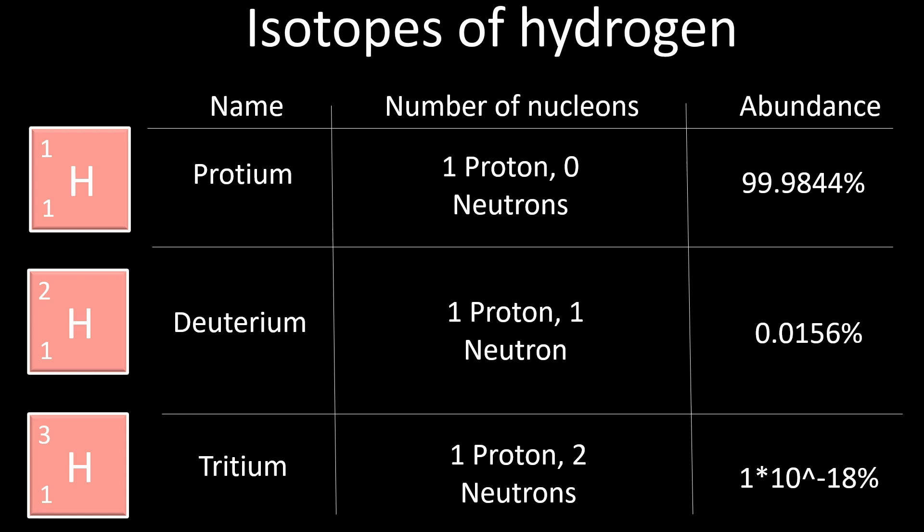Take hydrogen, for example. It can exist in multiple isotopic forms. For example, protium with just one proton represents the most common form, constituting approximately 99.9844% of all hydrogen.